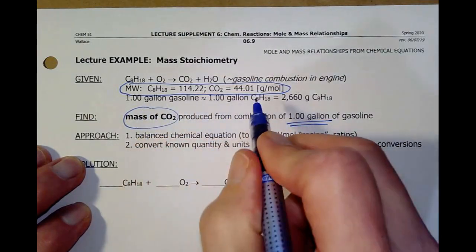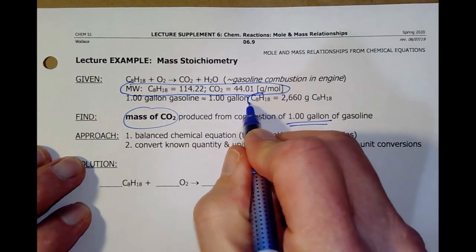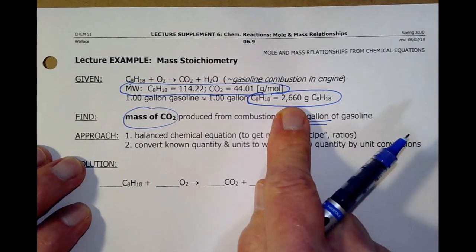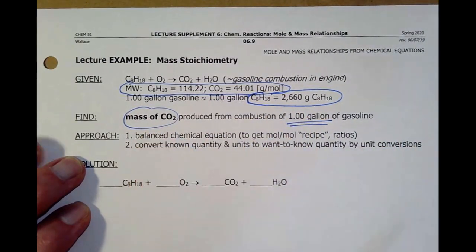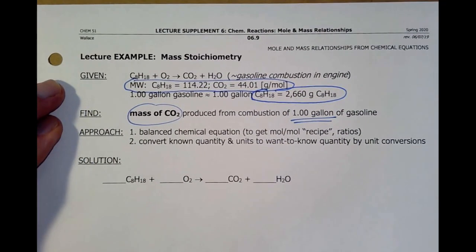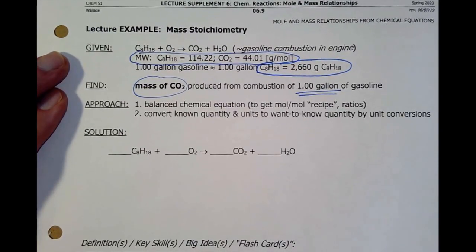Well, I've given a gallon of gasoline is 2,700 grams of the C8H18. So I want to somehow go from this grams, a gallon of gas, to grams of CO2. So, as I usually do, I'm going to start off with a complicated example and lay the whole thing out. And then we'll come back and break it down into smaller parts. Well, the first thing I need is a balanced chemical equation. I can't go anywhere unless I know that.